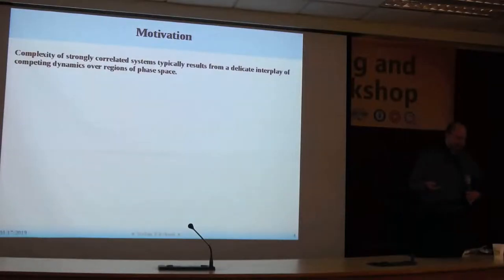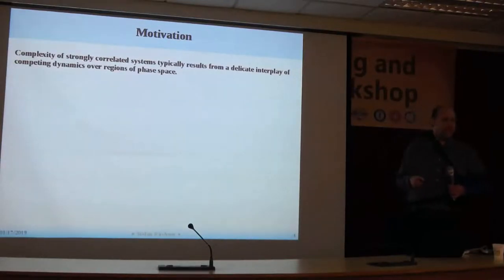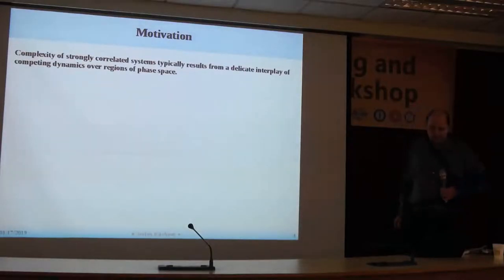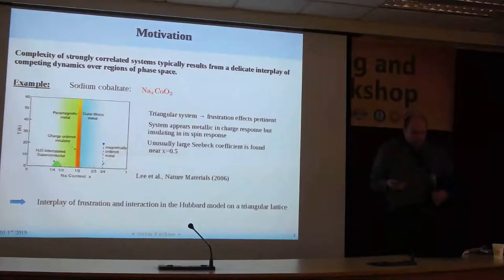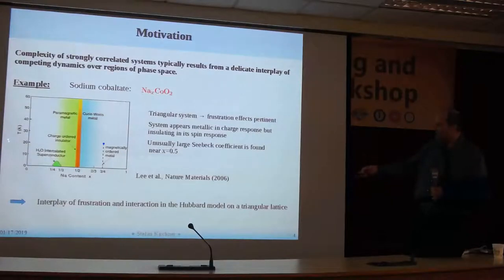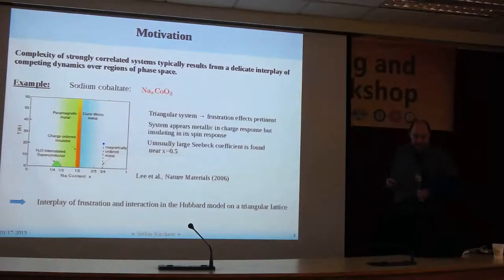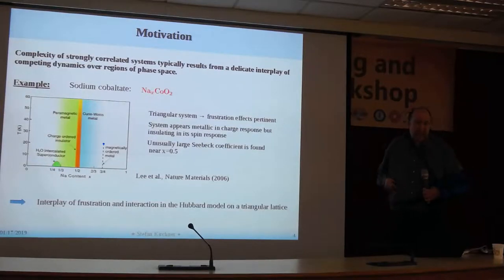Let me start with a commonplace statement that complexity in strongly correlated systems, and emergence — one of the topics of this conference — arises due to the interplay of interactions with frustrations and localization in part of phase space. What I have in mind is: if you take sodium cobaltate, for example, the phase diagram shown here is complex and rich, where frustration plays a role and which has features of spin physics and metallic features. A minimal model for sodium cobaltate is the one-band or two-band Hubbard model on a triangular lattice.